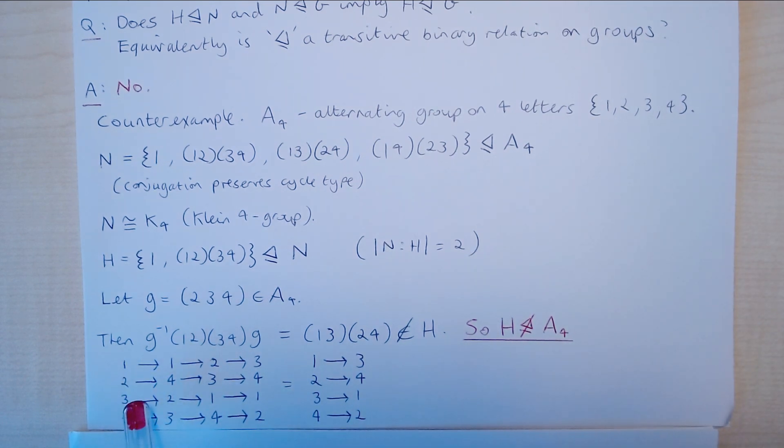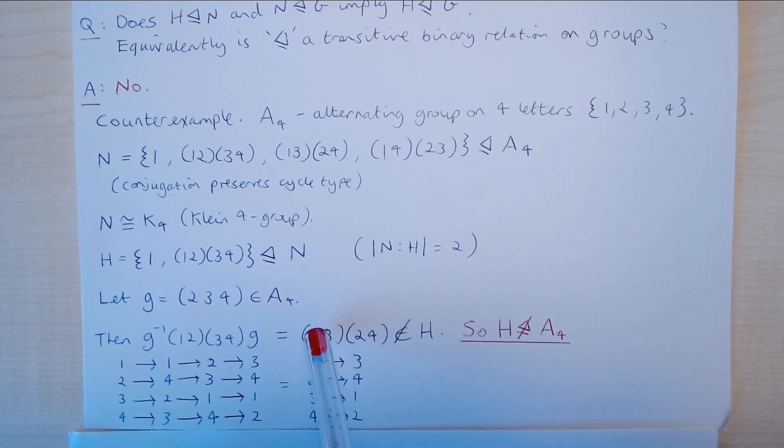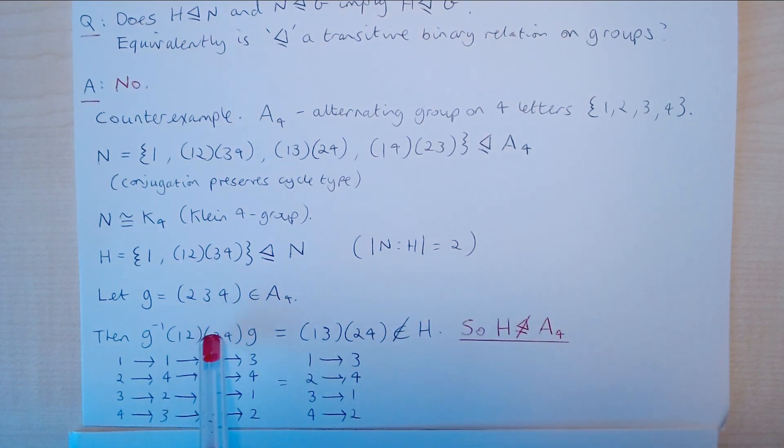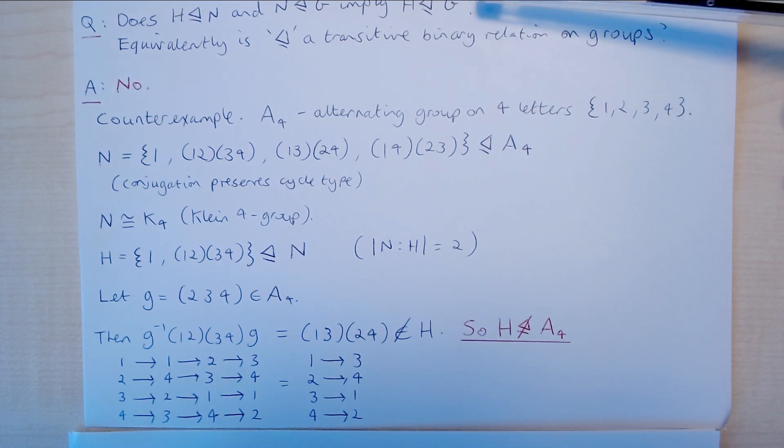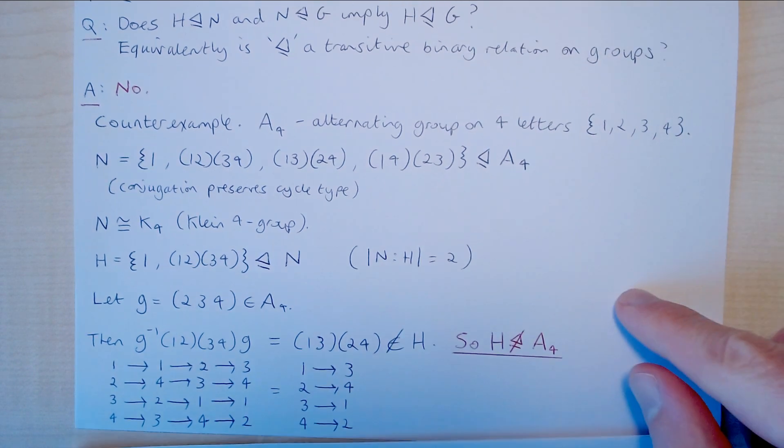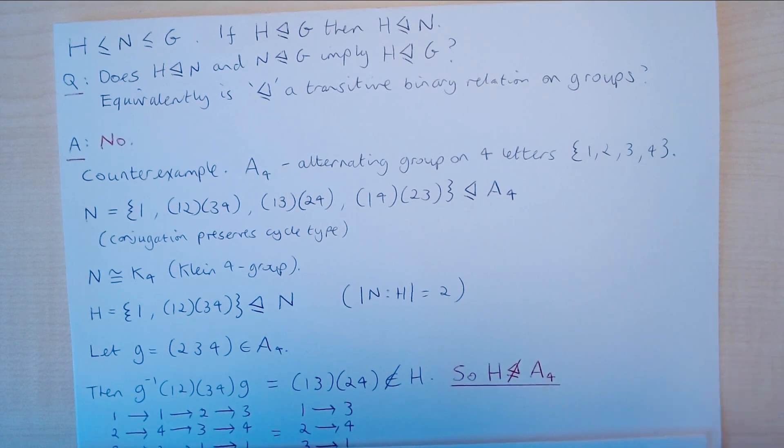When we do that and you can see down here how we're doing this. So first we're applying G inverse and then we're applying this element here and then we're applying G. What we actually get is this element and this element's not this element or not the identity element. And therefore it's not in H and therefore H cannot be a normal subgroup of A4. And in particular this means that this result at the top here does not hold.